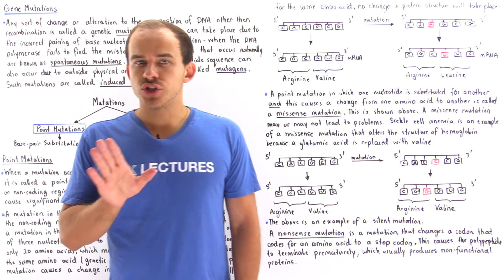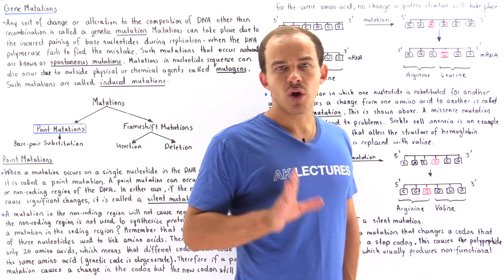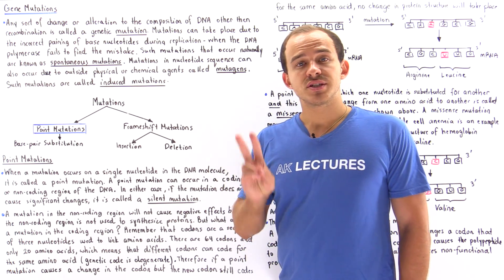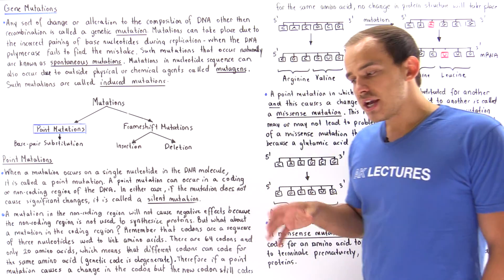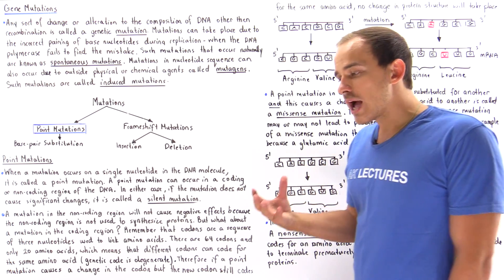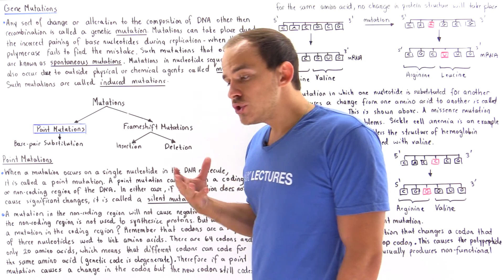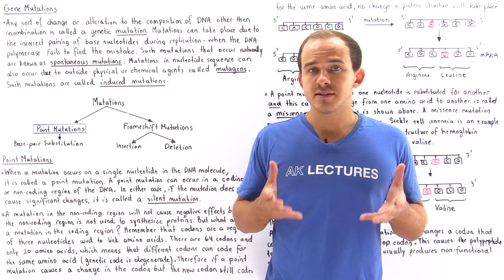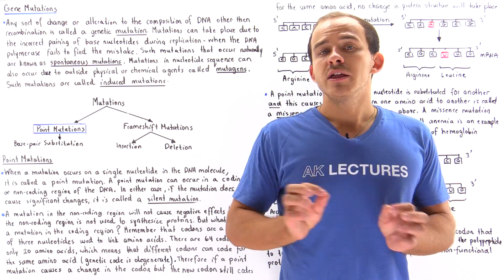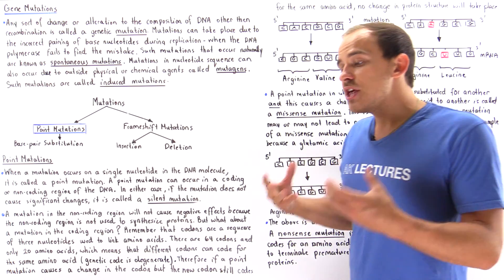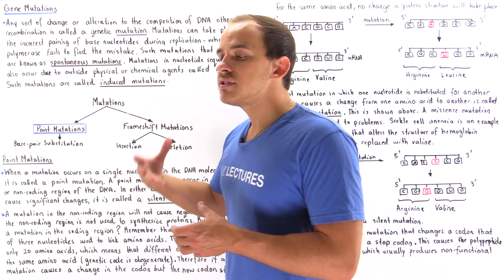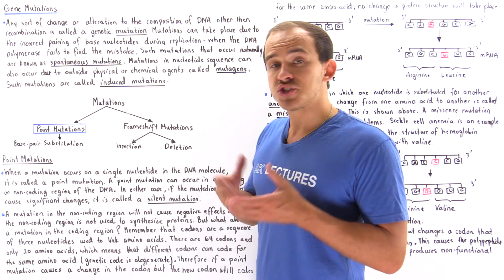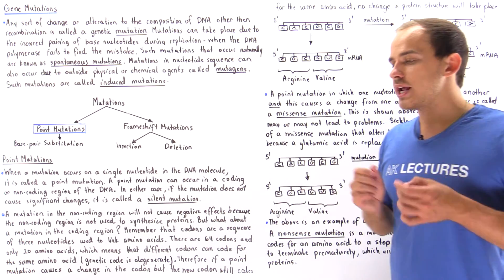How exactly do genetic mutations actually arise? Genetic mutations can arise as a result of two things. They can either arise spontaneously due to mistakes that take place in the natural processes inside the cell, or they can be induced by outside physical or chemical agents, such as UV radiation.